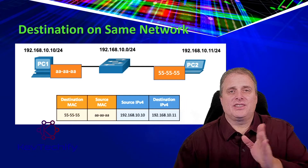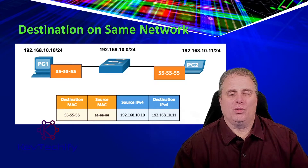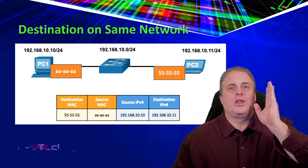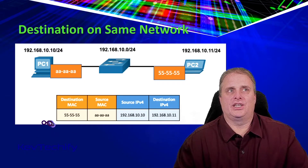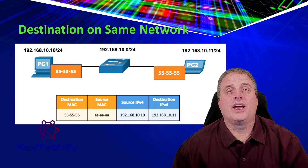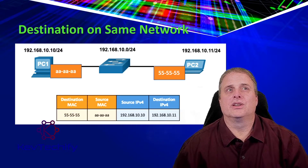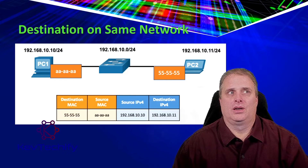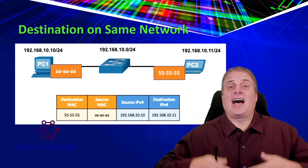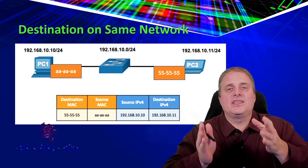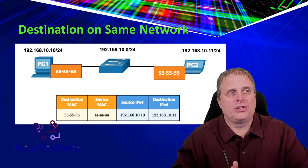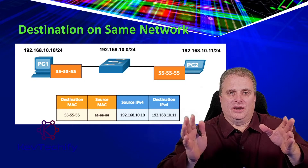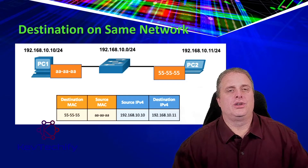If the destination is on your same network, we can use the Layer 2 address to send from the source to the destination. The Layer 2 address — the MAC address — is used to deliver frames from one NIC to another NIC on the same network. If the destination IP address is on the same network, the destination MAC address, that Layer 2 address, will be that of the destination device, and so it can be delivered directly to it.